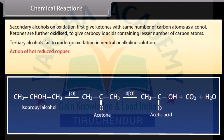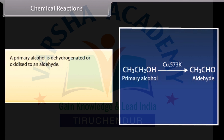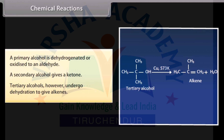Action of hot reduced copper: when vapors of primary, secondary, or tertiary alcohols are passed over hot reduced copper at 573 Kelvin, different products are obtained. A primary alcohol is dehydrogenated or oxidized to an aldehyde. A secondary alcohol gives a ketone. Tertiary alcohols, however, undergo dehydration to give alkenes.